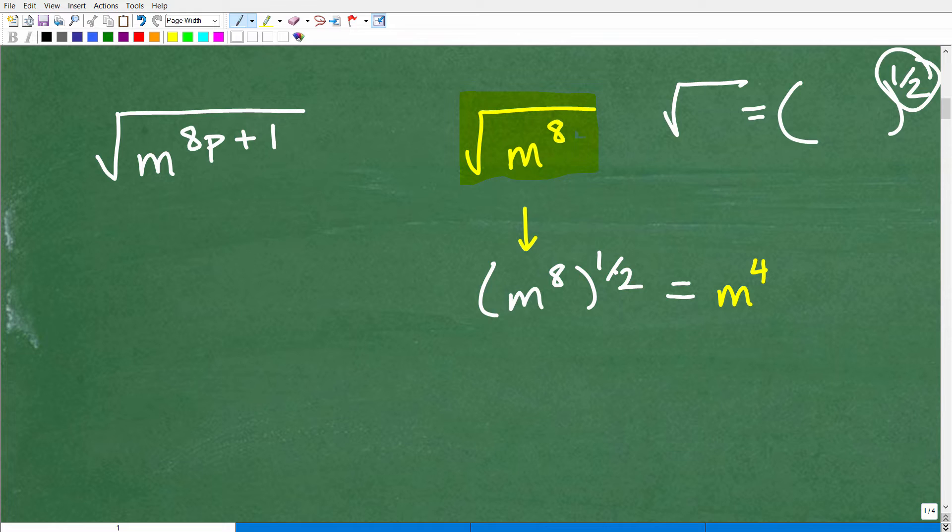So we're working with something called rational exponents. And if you didn't know that the square root of something is the same as taking something to the 1 half power, well, this is critical. And hopefully you've learned this somewhere along the line in your algebra course. If you haven't learned it, you will be learning it.